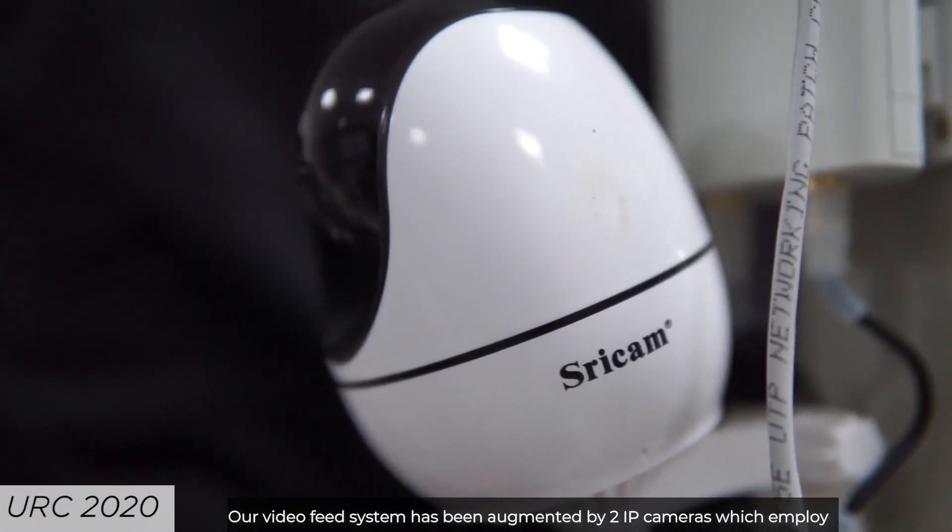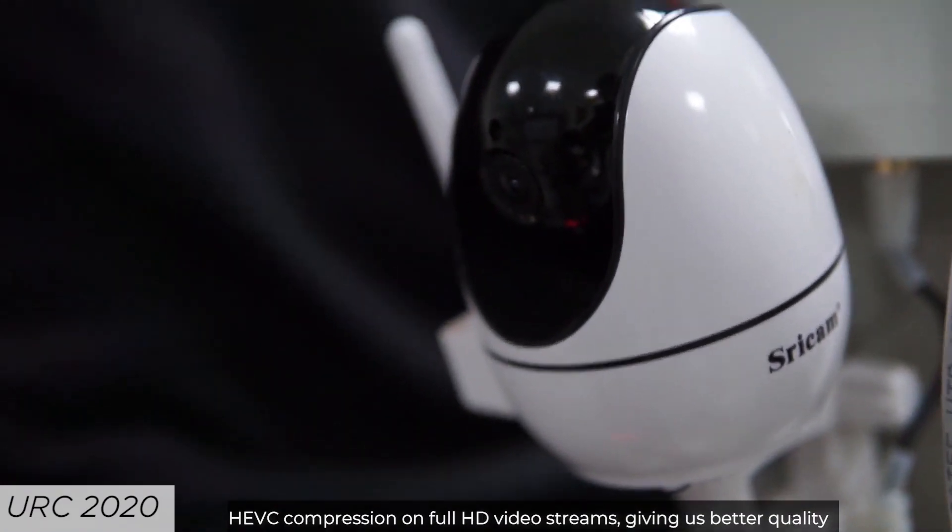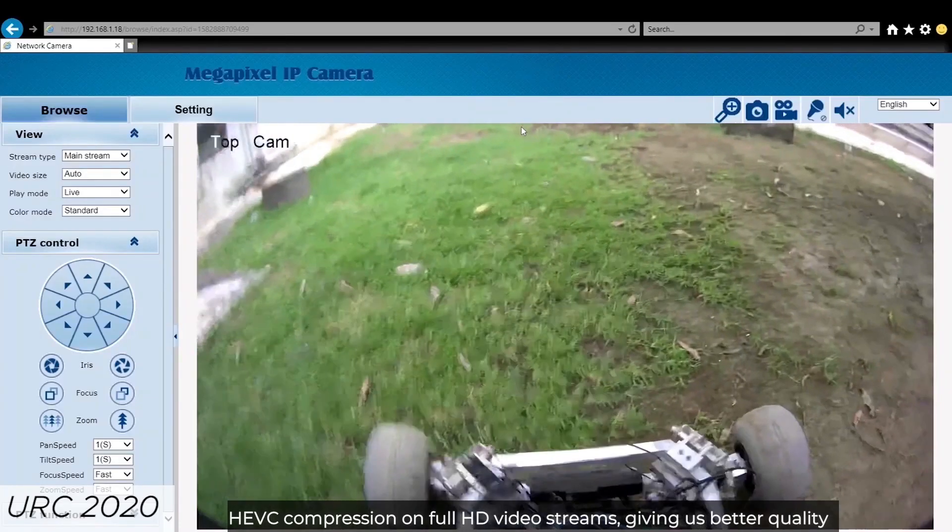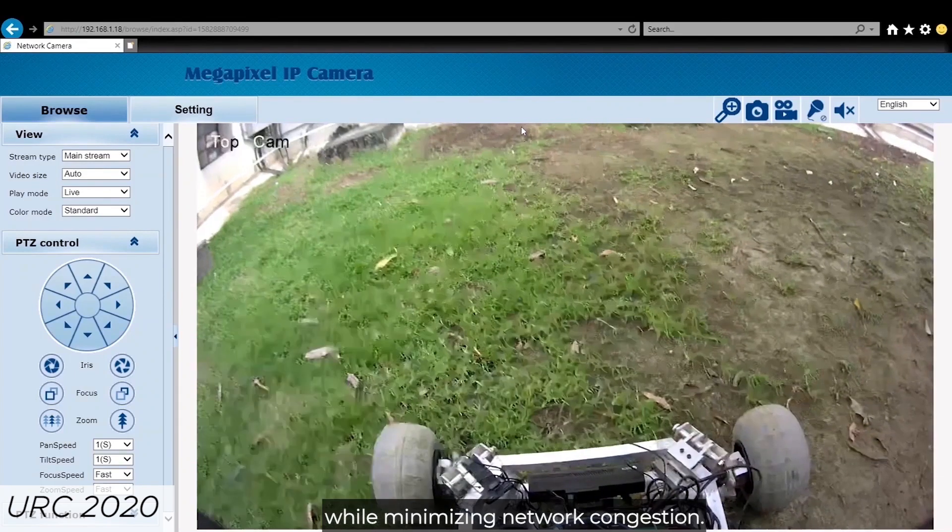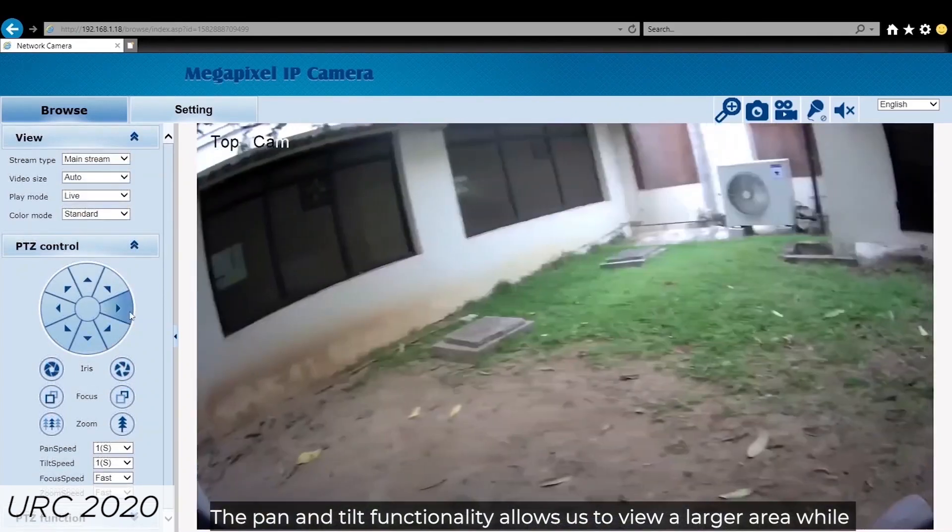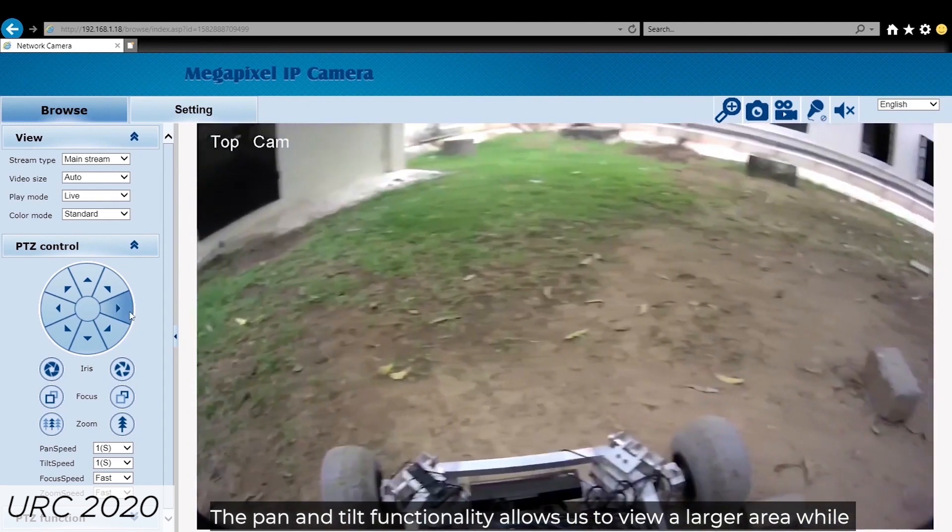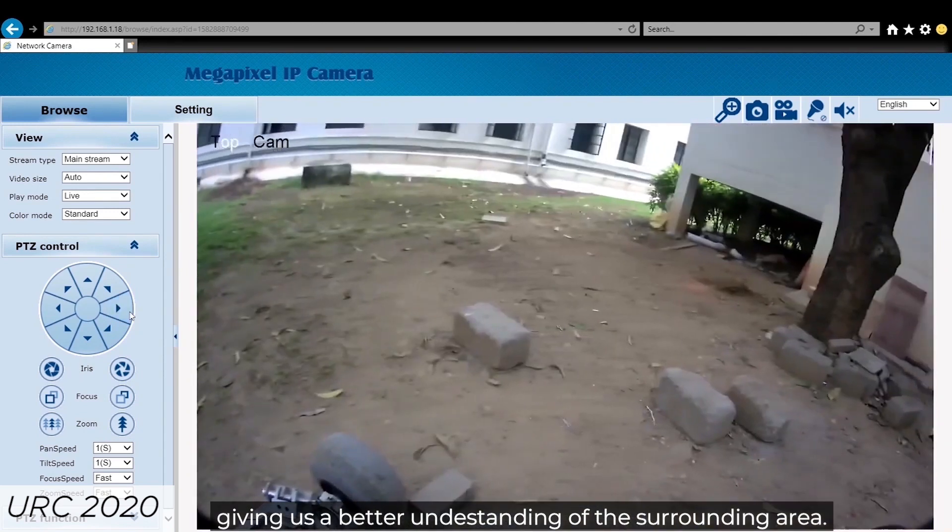Our video feed system has been augmented by two IP cameras which employ HEVC compression on full HD video streams giving us better quality while minimizing network congestion. The pan and tilt functionality allows us to view a larger area while giving us a better understanding of the surrounding area.